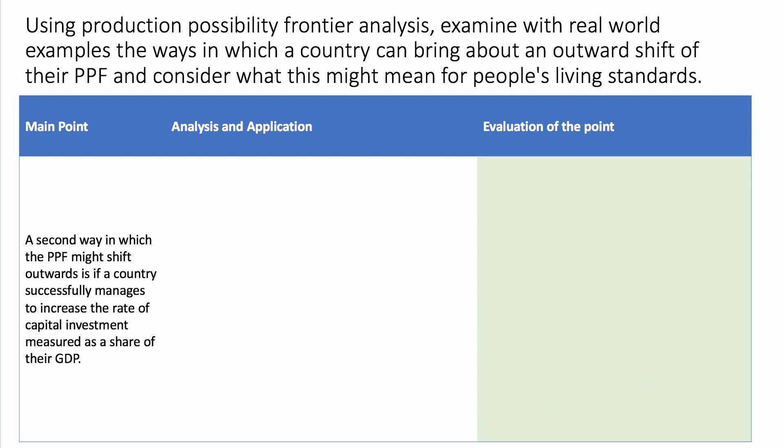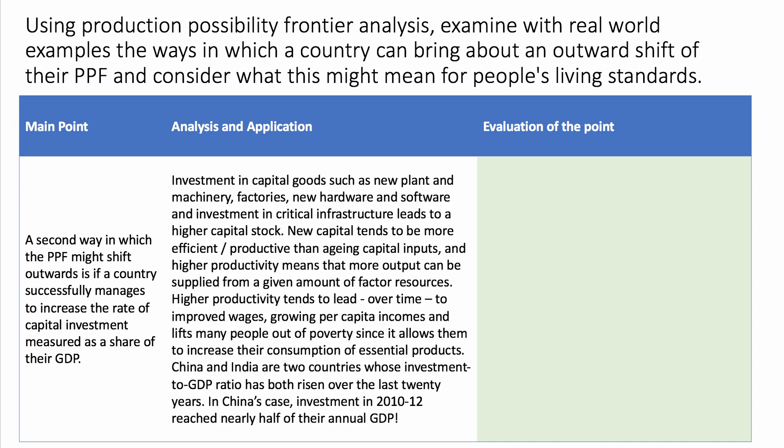Our second point is that the PPF might shift outwards if a country successfully manages to increase investment — the rate of investment measured as a share of GDP. Define your terms: investment in capital goods such as new plants, machinery, factories, hardware and software, and investment in key infrastructure such as ports, telecoms, and energy leads to an increased capital stock. New capital tends to be more productive than older capital, and higher productivity means more output can be supplied from a given amount of factor inputs.